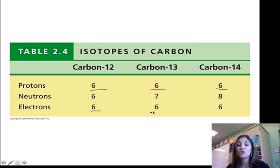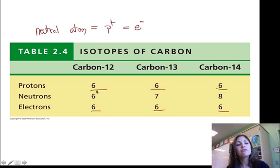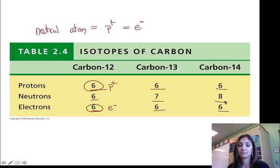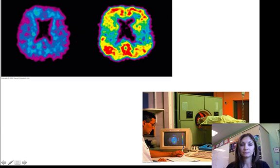In an isotope, the electrons are the same. Now, how do we know number of electrons? Well, in a neutral atom, that's one without a charge, then the number of protons has to equal the number of electrons. So if protons are forever, and we're talking about a neutral atom, six protons is balanced by six electrons. Six positive charges balanced by six negative charges to give a total charge of zero. In an isotope, it's the neutrons that are changing.